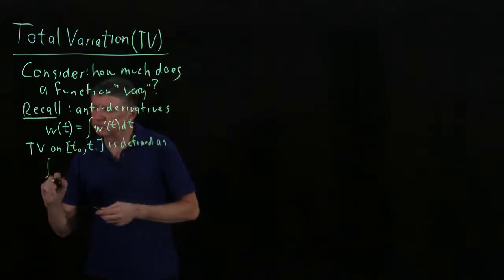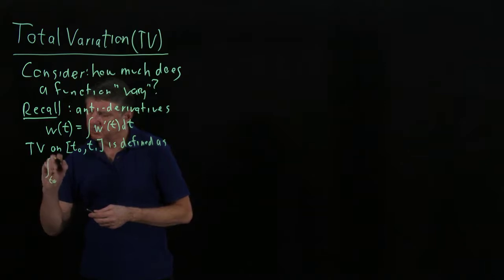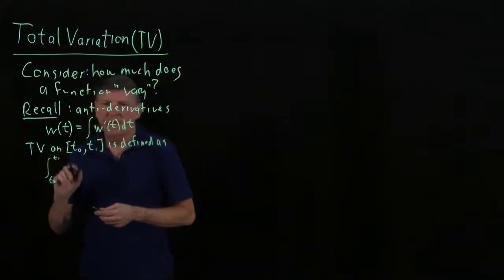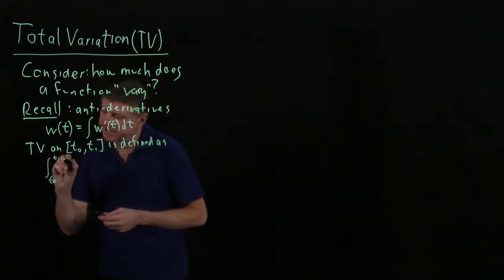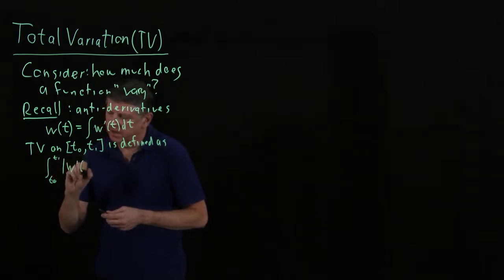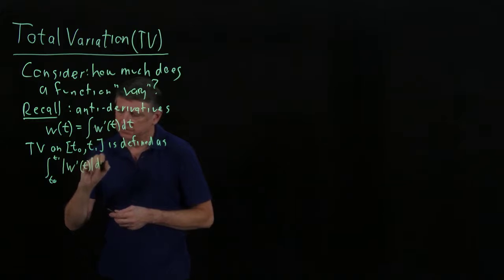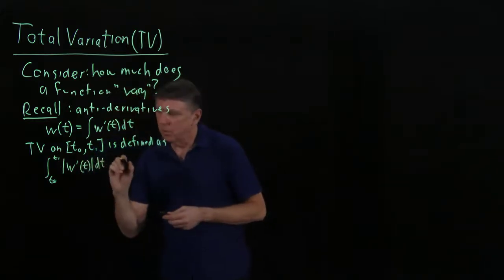One is, it's the integral from t0 to t1, and this is what we mean by vary, is the absolute value of the derivative with respect to the scalar.